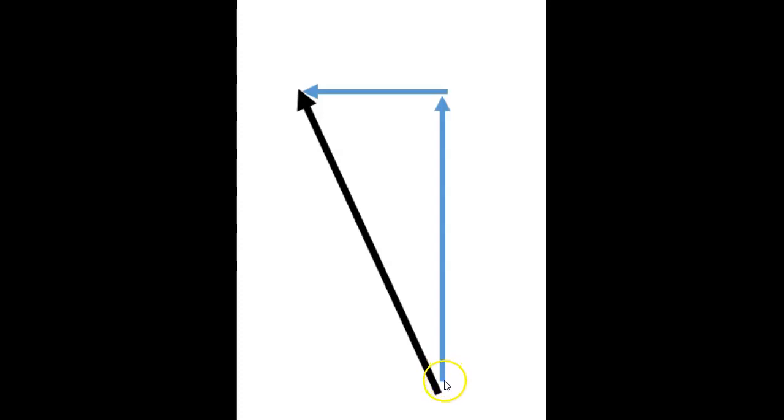The component vectors start here, go to here, go to here, and they end in the same place. So the original vector starts and ends in the same place as the component vectors.